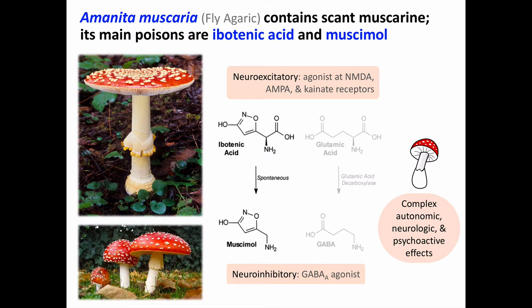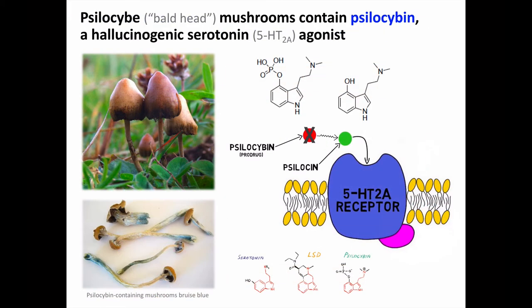Amanita muscaria is the most classic and widely pictorially represented of all mushrooms, with an annulus around the stipe and notable white scales on the cap as remnants of its universal veil. Psilocybe mushrooms contain psilocybin, a hallucinogenic serotonin agonist. Psilocybin is essentially a prodrug metabolized into psilocin, which binds to serotonin-2A receptors. We can see the structural similarity between serotonin, psilocybin, and lysergic acid diethylamide, another hallucinogenic drug with serotonergic activity.